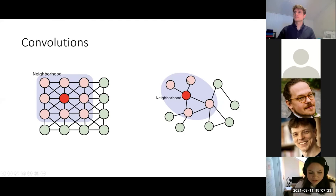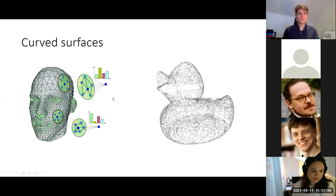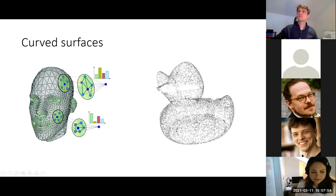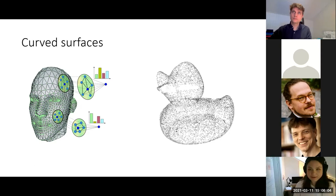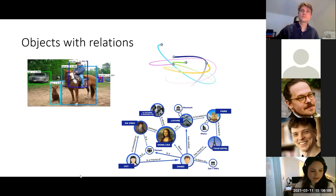This is a way to generalize the convolution — the edges can now be of different shapes. By doing this, we can use this model on any structure. Here we have examples of curved 3D surfaces where we can apply graphs, or point clouds where the neighborhood would be the points closest to the source node. Since we have a graph, we can also represent objects with relationships to each other, such as objects in pictures, physical particles interacting, or knowledge graphs.